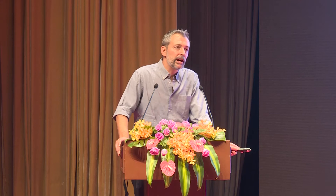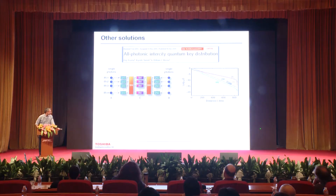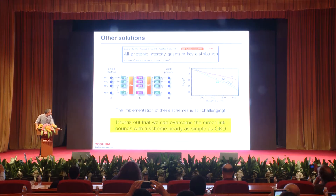A scheme by Koji Azuma, Kiyoshi Tamaki, and Bill Munro using only quantum non-demolition measurements and multiplexed single-photon sources (no quantum memories) can overcome the TGW bound. However, these schemes are still difficult to implement. Fortunately, it turns out we can overcome the direct-link bounds with a scheme nearly as simple as QKD: twin-field QKD.